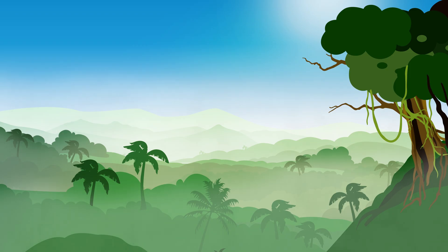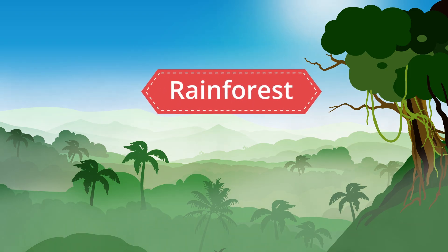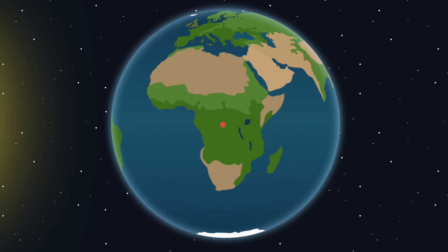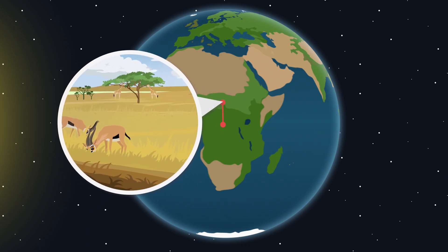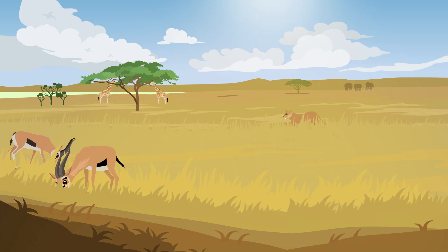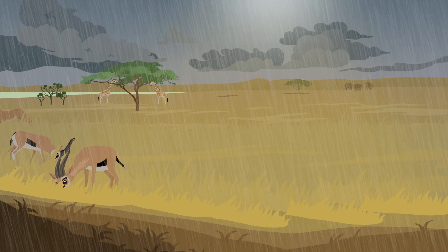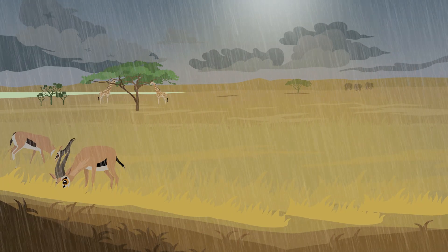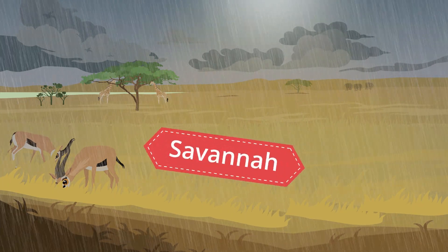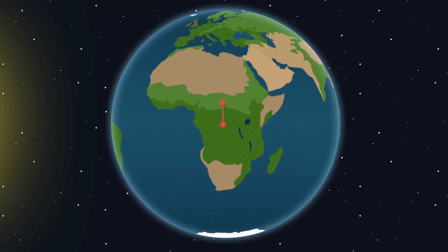The forests are green and dense and are called rain forests. Moving north from the equator, large plain areas spread out. The vegetation is tall grass and scattered bushes and trees. The climate is drier here, but rain comes in vast amounts during certain periods of the year — rain seasons. This is the savannah.